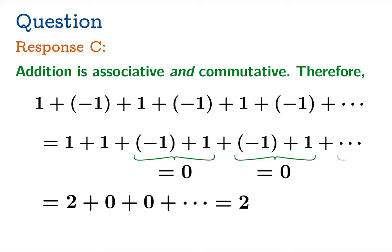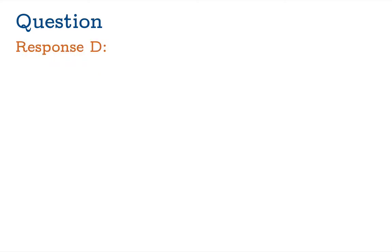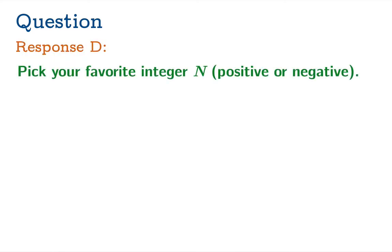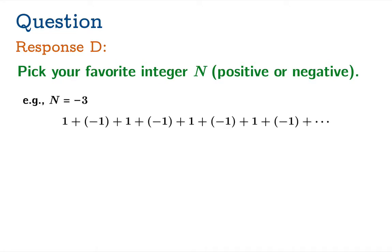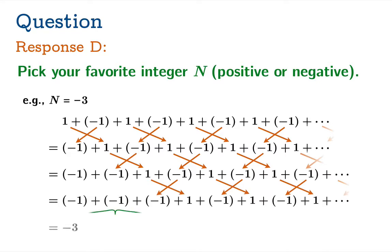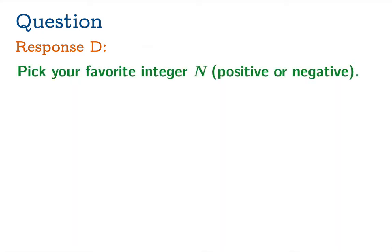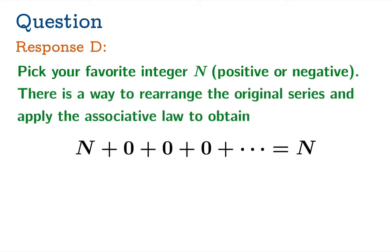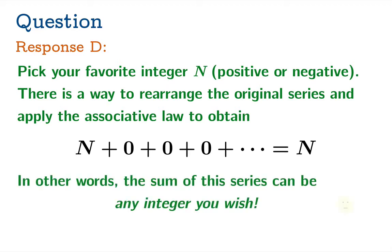We seem to be getting multiple-choice responses. In fact, pick your favorite integer n, positive or negative — say n equals negative three. Start with your series, apply the commutativity law a few times, and those three terms add up to negative three, with the rest associating to zero. You can vary this argument to conclude that given any integer n, there's a way to rearrange the original series and apply the associative law to obtain n as your sum. Infinite series aren't going to be very useful if some of them can equal anything we want.